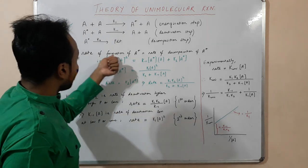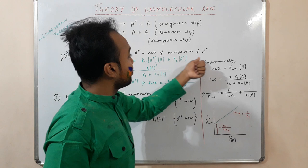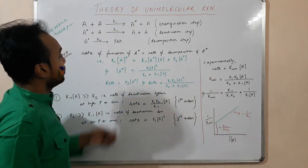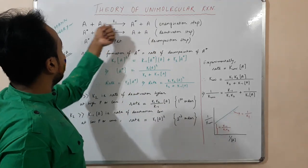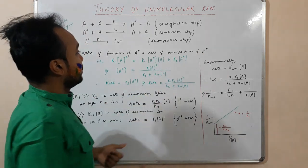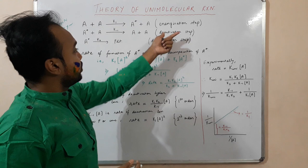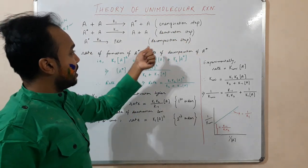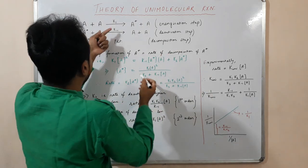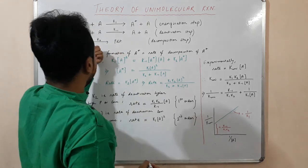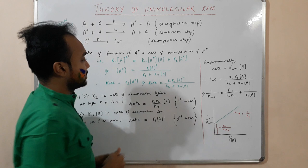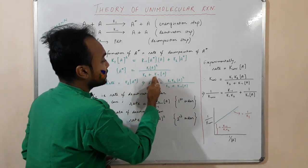The steady-state approximation means the rate of formation of A* is equal to the rate of decomposition of A*. The rate of formation of A* is K₁[A]². The rate of decomposition of A* occurs in two steps — deactivation and decomposition — giving K₋₁[A*][A] plus K₂[A*]. From here we can get the concentration of A* as K₁[A]² divided by (K₂ + K₋₁[A]).